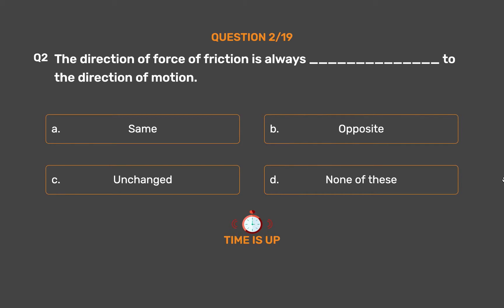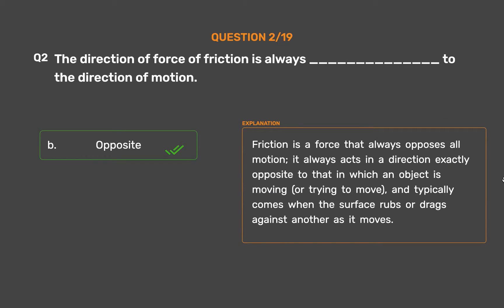The correct answer is Option B: Opposite. Friction is a force that always opposes all motion. It always acts in a direction exactly opposite to that in which an object is moving or trying to move, and typically comes when the surface rubs or drags against another as it moves.